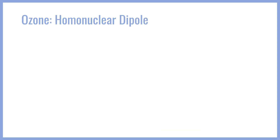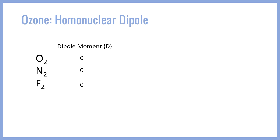Let's look at the ozone molecule. When we think of homonuclear molecules — made of only one type of atom — we typically expect no dipole moment, because an electronegativity difference of zero leads to no net pulling of electron density. O2, N2, F2, and other diatomic halogens are all completely nonpolar. And yet O3 ends up having a dipole moment of 0.53 Debye, which is appreciably polar. Why is that?